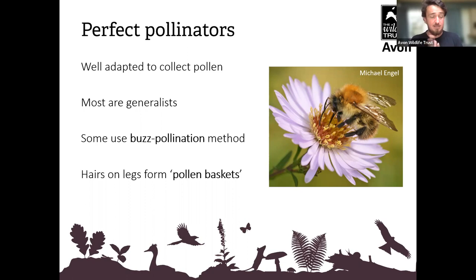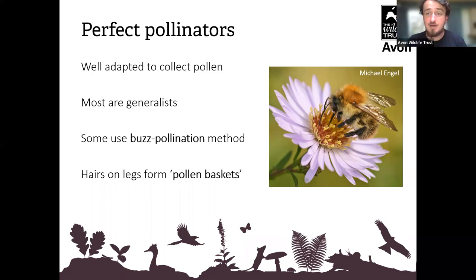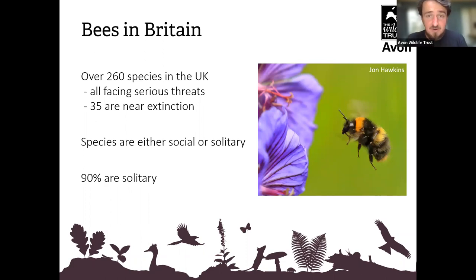Bees are really very well adapted to collecting pollen. Most bees are generalists — not that fussy as to which plants they go for — which is a useful strategy. They've got wonderful methods of acquiring pollen, including buzz pollination: they stand in a flower and buzz the pollen off onto themselves. They collect pollen in pollen baskets among the hairs on their legs — if you see bees with bright yellow or orange legs, they've had a good shopping trip.